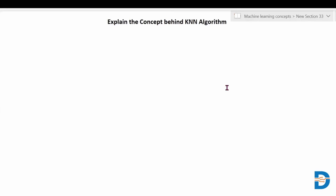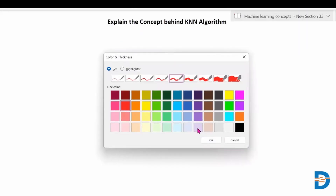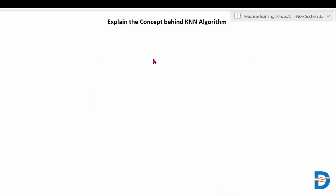Hello everyone. Today we'll find out what is the concept behind the KNN algorithm. KNN stands for K Nearest Neighbors, and it depends on the concept of neighbors.